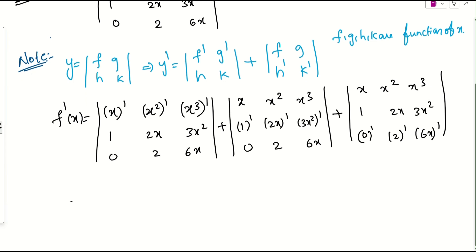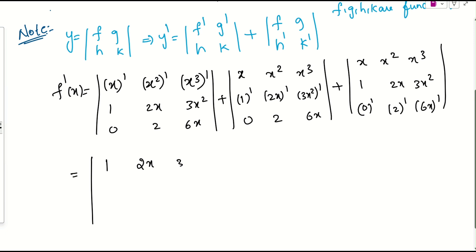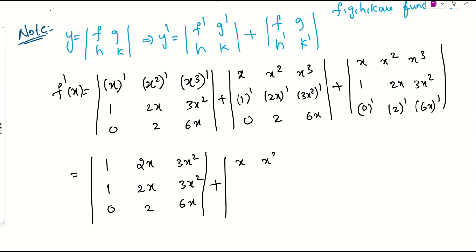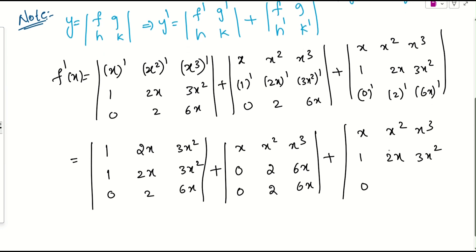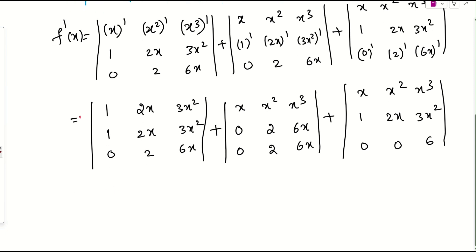The derivative of x is 1, x squared gives 2x, x cubed gives 3x squared. So the first determinant has first row 1, 2x, 3x squared and rows 2 and 3 unchanged. For the second determinant, derivative of 1 is 0, derivative of 2x is 2, derivative of 3x squared is 6x, with rows 1 and 3 unchanged. For the third determinant, derivative of 0 is 0, derivative of 2 is 0, derivative of 6x is 6, with rows 1 and 2 unchanged.